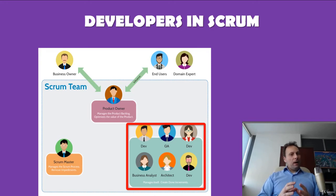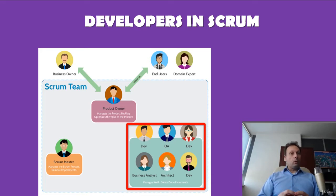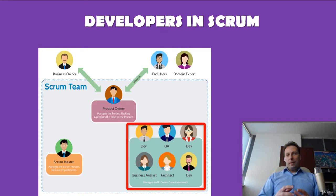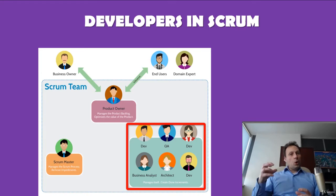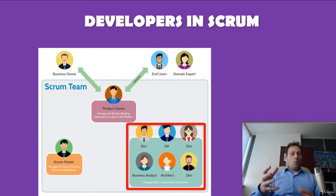Scrum never defines more specific roles. Scrum only tells you that everyone who is involved in developing the product is a developer — as simple as that. This should make people think carefully about who should be a developer. When organizations are starting with Scrum, many will think that the term developer equates to those who write the code — that is, programmers or coders.